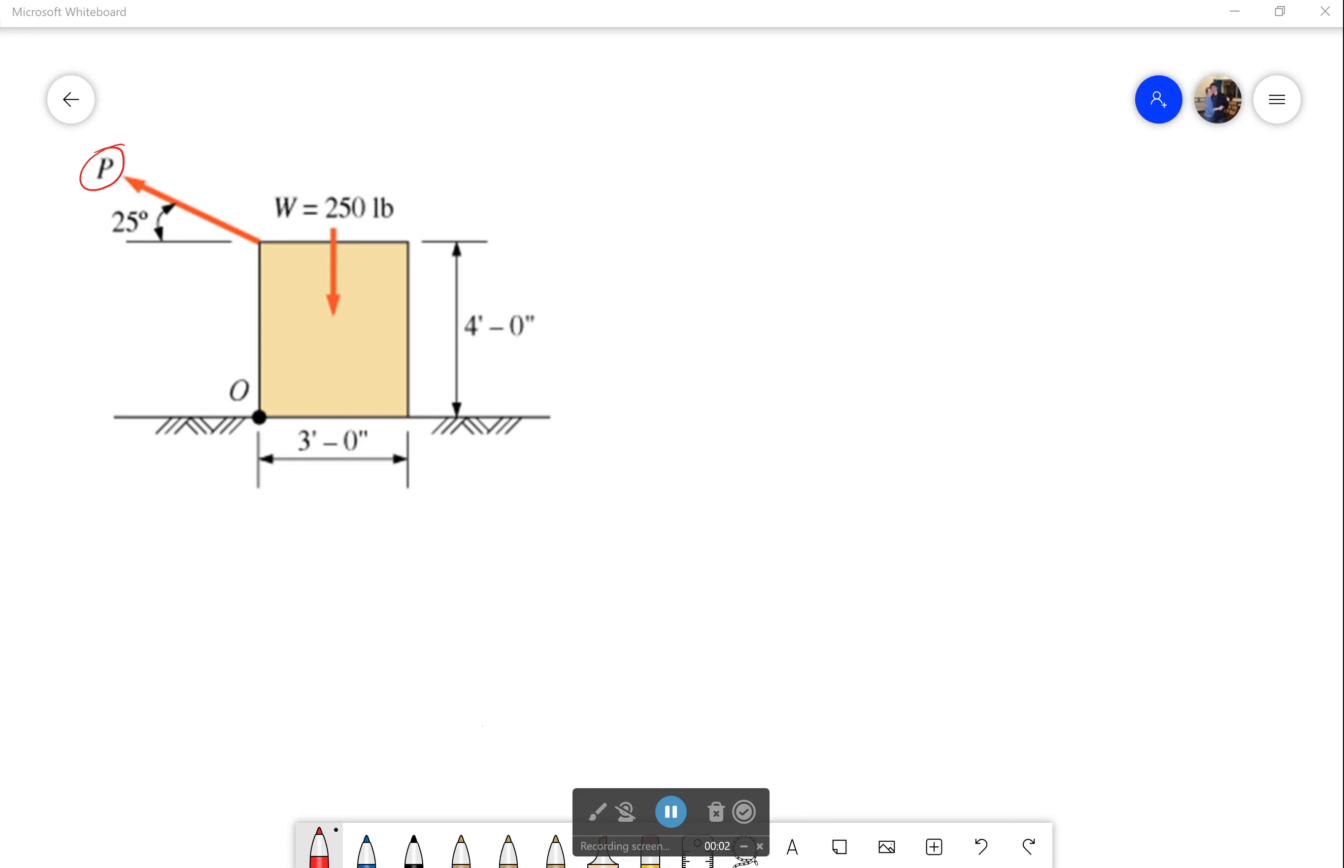Hello everyone and welcome back. Okay so let's try to solve this problem. What do we have here? Well we have a box that's being pulled by a load P and we have a static coefficient of friction of 0.25.